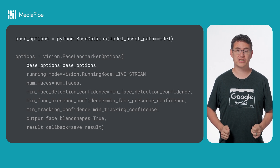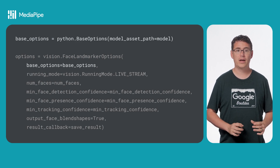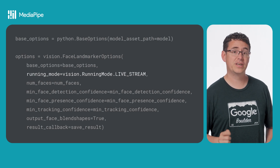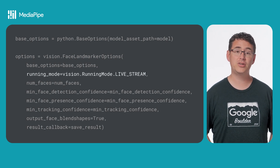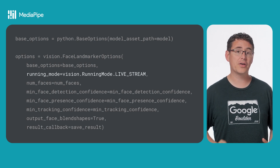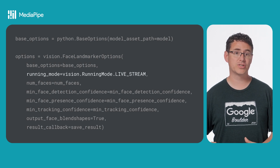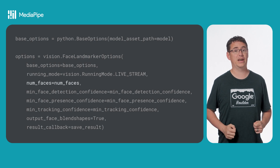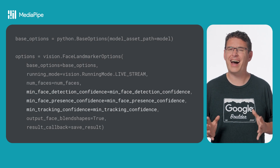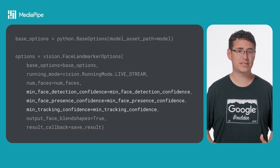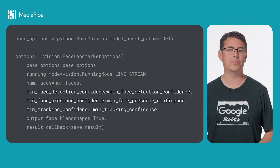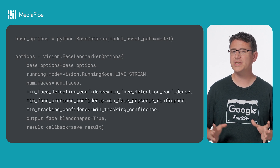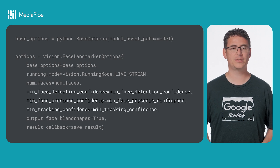You will also need to initialize the face landmark detector with an initial set of configuration option objects. The first is the base options object that wraps standard things available in every task, like the path to your model. The second object is the set of options specific to the face landmarker, and it wraps the base options object. The running mode tells MediaPipe tasks what sort of data flow to expect — for this example I'm using a constant stream of camera frames, but other modes include a static image or video file. The number of faces option sets the max number of faces the task should attempt to detect. These confidence threshold values let you set the minimum confidence required to detect a face, which can really increase the speed of your overall landmarking inference.